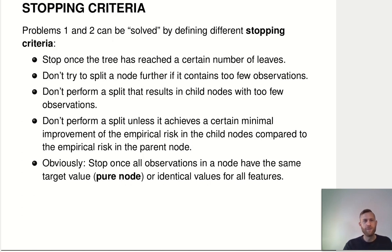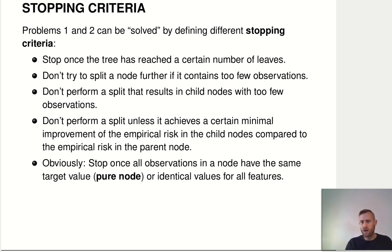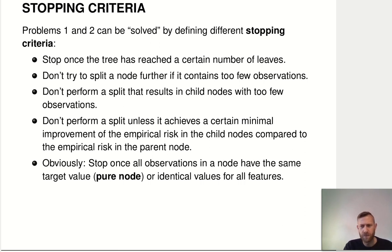Problems one and two can at least be approximately tackled by just introducing sensible stopping criteria that avoid building a crazy tree with way too many leaves. The first thing is to just limit the overall complexity of your tree — say, stop once you have 60 terminal nodes. The second idea is that if you're in a node that already has very few observations in it, it's likely not worth it to try to split that node further.